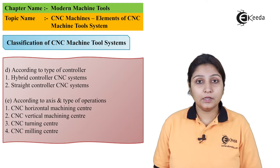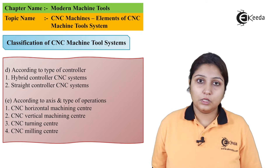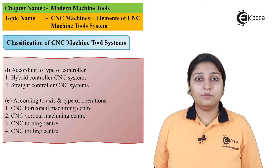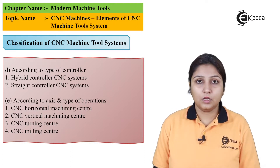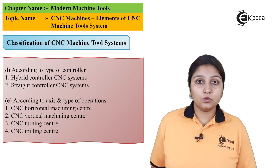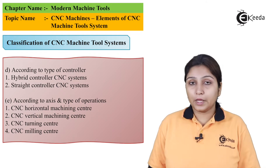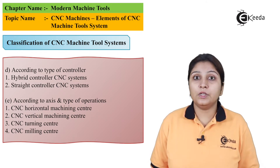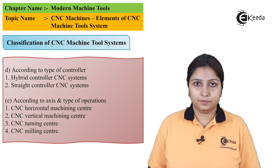According to the type of controller, CNC machines can be hybrid. According to the machining centers, they can be vertical, horizontal, turning, facing, or any other machining type. CNC machines can be used in making all types of products, but you need part programming to do that.